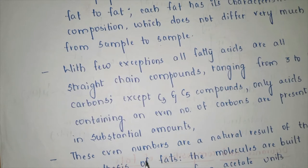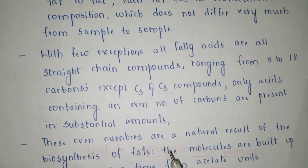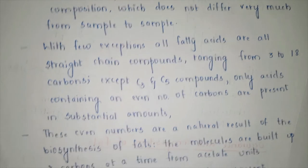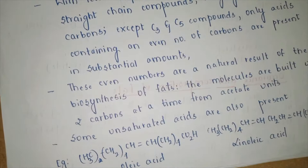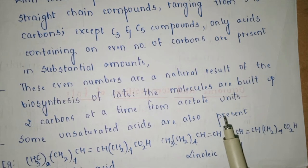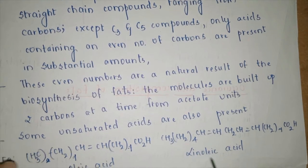Only acids containing an even number of carbons are present in substantial amounts in naturally occurring systems. These even numbers are natural because they result from the biosynthesis of fats — molecules are built up two carbons at a time from acetate units. Each time an acetate unit adds two carbon atoms, which is why fatty acids generally have even numbers, with C3 and C5 as exceptions.